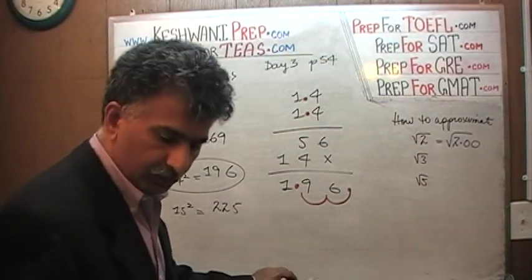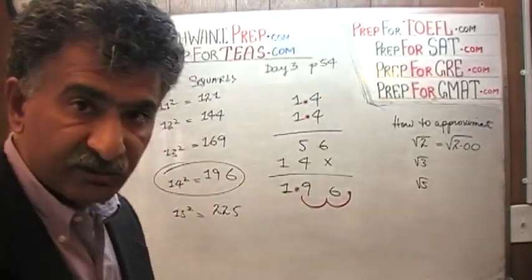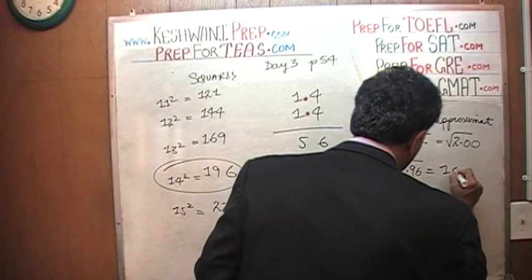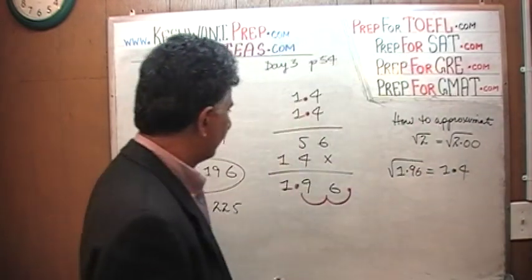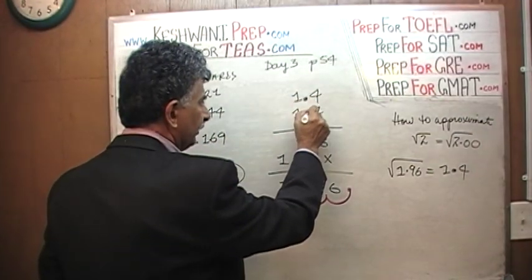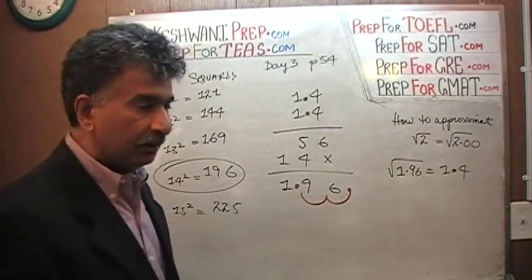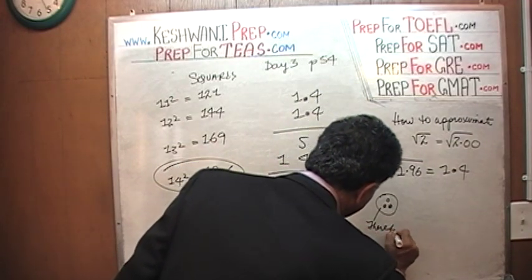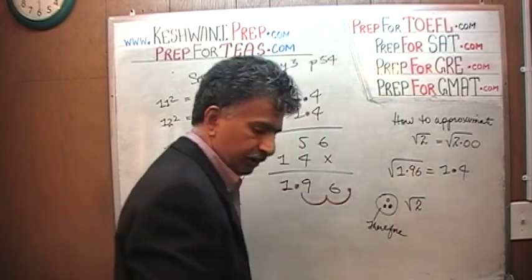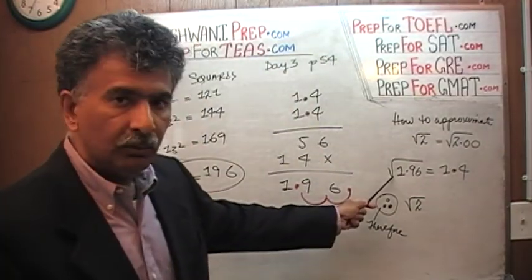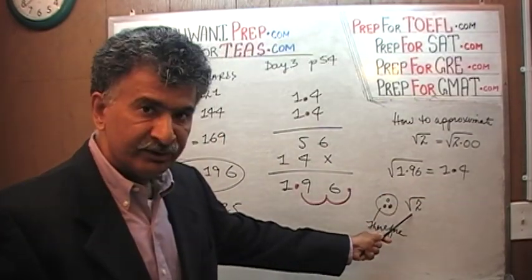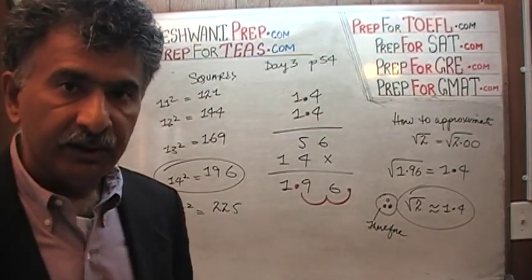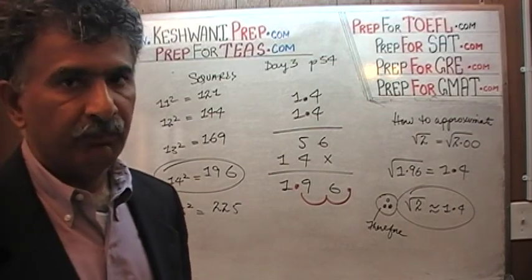What we just demonstrated is that the square root of 1.96 is exactly 1.4. We place a decimal point and move it two places. Therefore, since the square root of 1.96 is exactly 1.4, and 1.96 is very close to 2, it follows that the square root of 2 is approximately 1.4. That comes directly from knowing that 14 squared is 196.